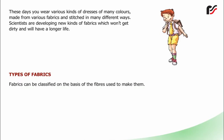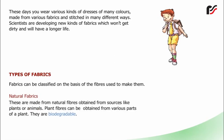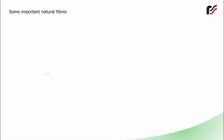Types of fabrics: Fabrics can be classified on the basis of the fibers used to make them. Natural fabrics are made from natural fibers obtained from sources like plants or animals. Plant fibers can be obtained from various parts of a plant. They are biodegradable. Some important natural plant fibers include cotton.